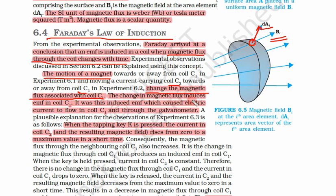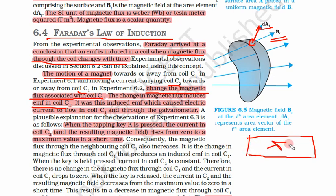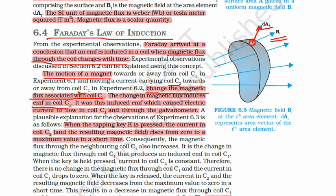The change in magnetic flux induces an EMF in coil C1 — some kind of voltage. If there is voltage there will be current, because when there is no potential difference there is random flow of electrons and net current is zero. But as soon as we apply a positive potential here and negative potential there, there will be net movement of electrons towards the positive side.